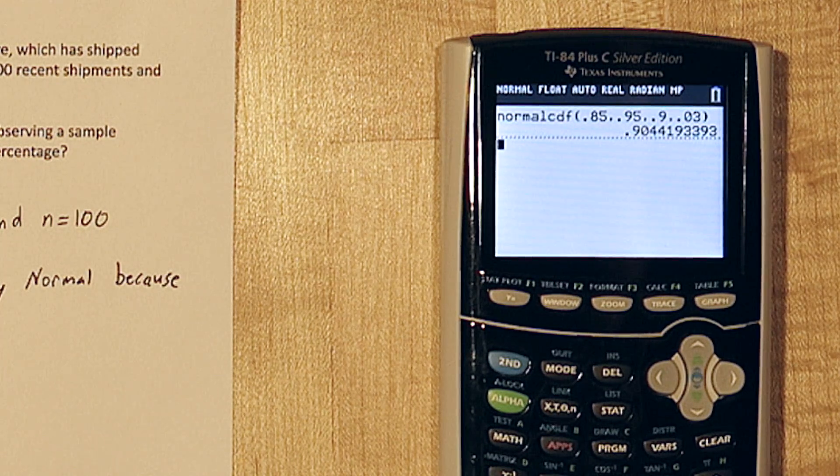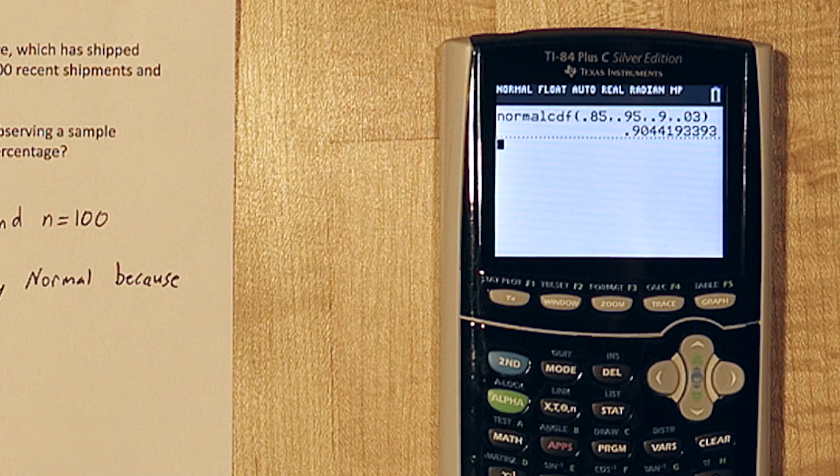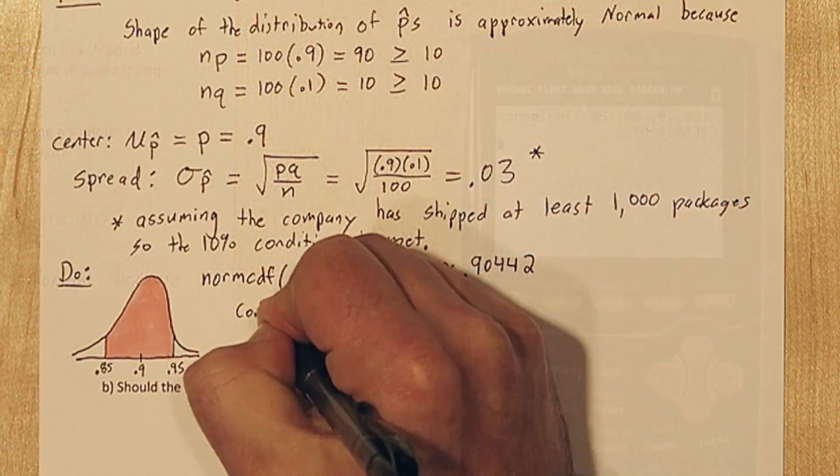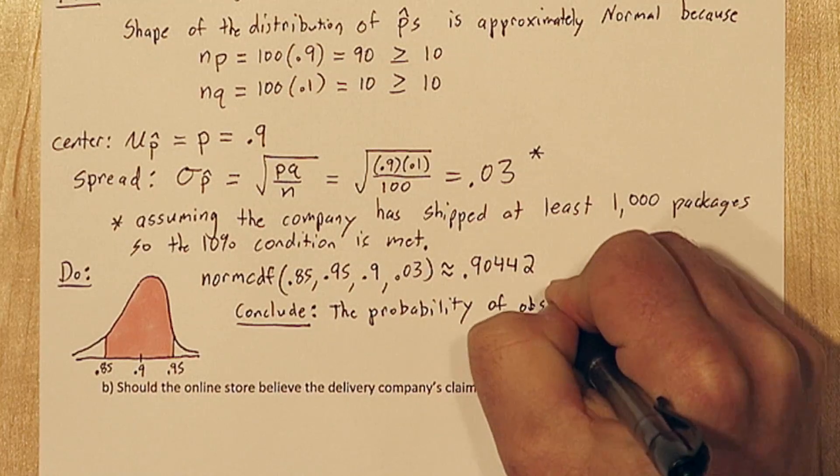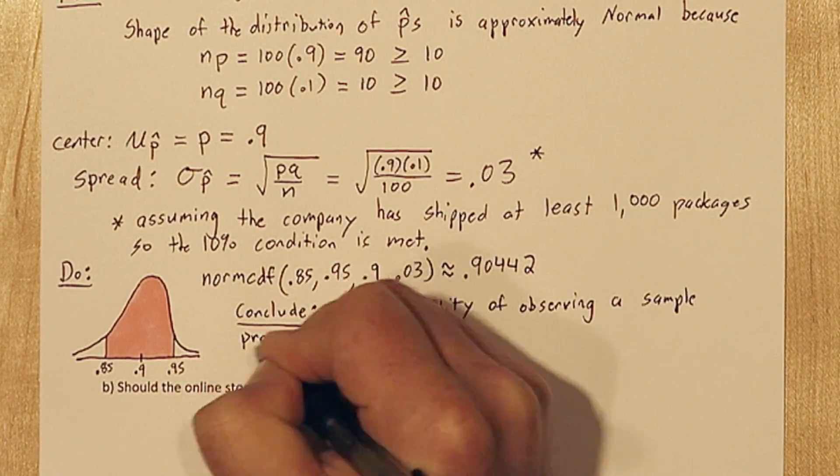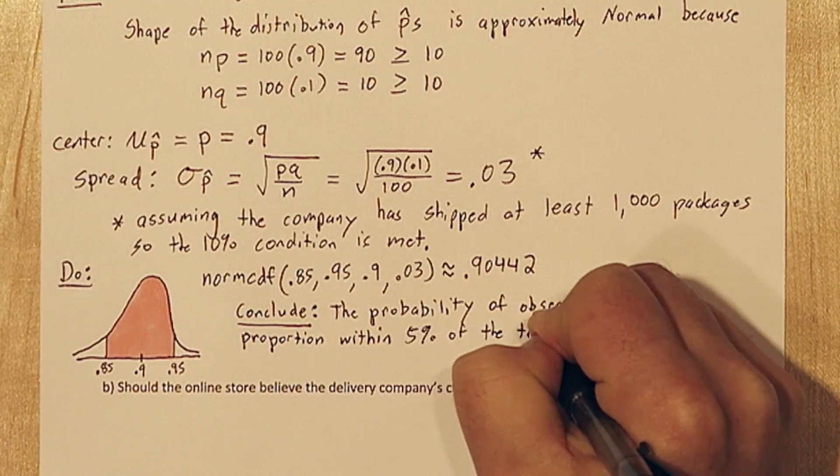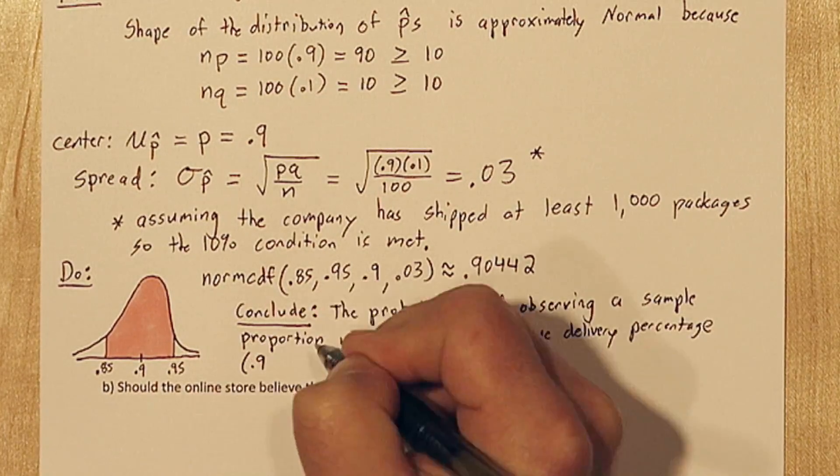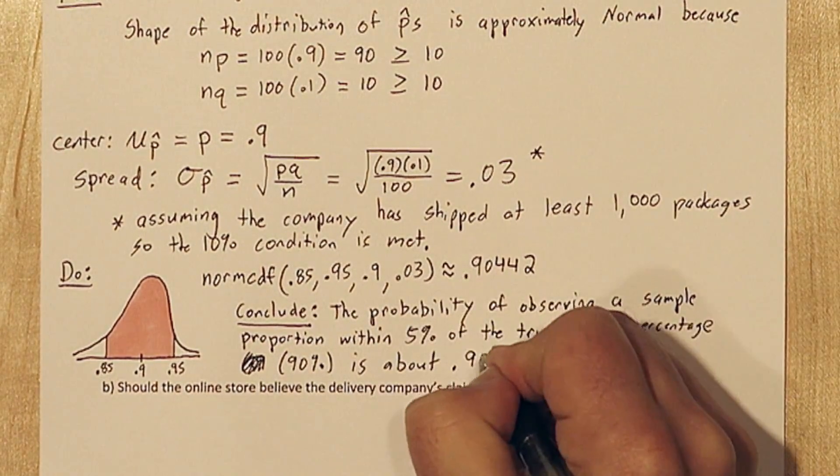So our probability is approximately 0.9044. Now let's conclude. The probability of observing a sample proportion within 5% of the true delivery percentage, which is 90%, is about 0.90442.